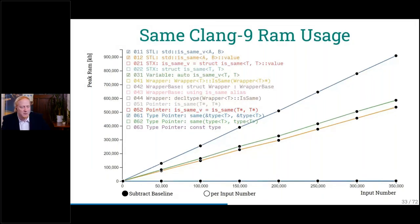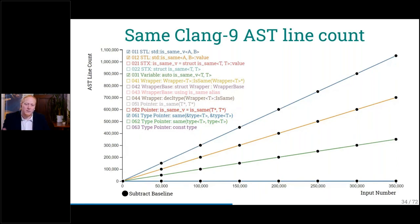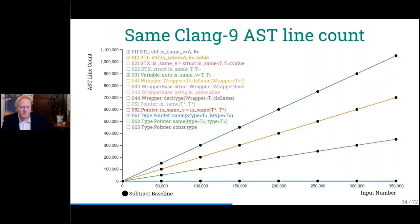Astonishingly, the pointer part is not really measurable — it doesn't take any RAM for the compiler to compare two types if we do it that way. I also measured the AST lines. The AST print gives us back all the instantiations and I just count how many lines we get. This is a very good indication of how much work the compiler has to do — usually the shorter the time you take, the fewer lines of code we generate.